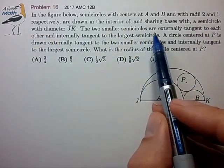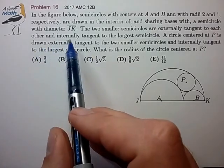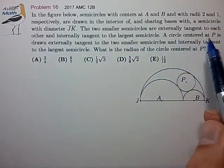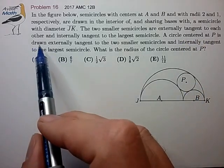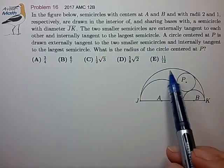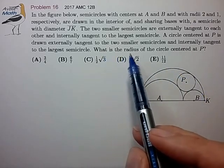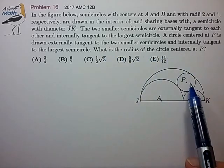The two smaller semicircles are externally tangent to each other and internally tangent to the largest semicircle. A circle centered at P is drawn externally tangent to the two smaller semicircles and internally tangent to the larger semicircle. What is the radius of the circle centered at P?